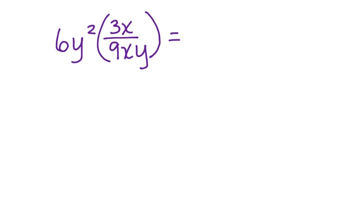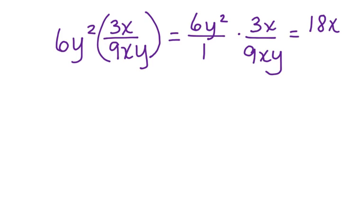we're going to start by putting the 6y squared over 1 times 3x over 9xy. Now we can multiply across. 6y squared times 3x gives us 18xy squared divided by 9xy.